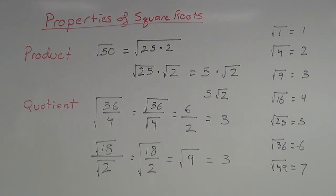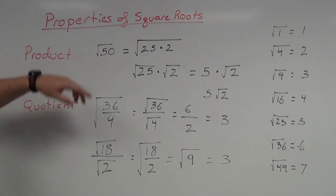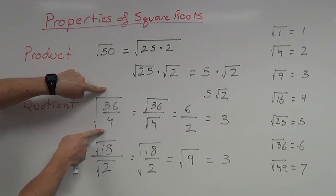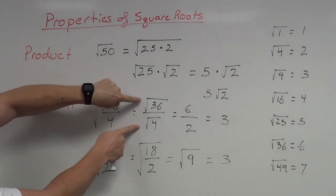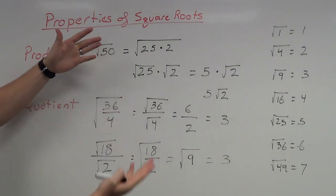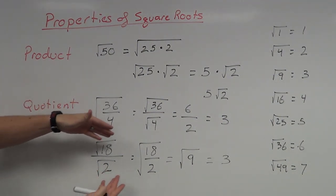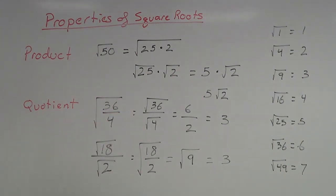So the quotient rule — there are kind of two ways you can look at it. You can take a fraction underneath the radical and split it up: take the square root of the top and the square root of the bottom. Or, if you have the square root of the top over the square root of the bottom, you can go backwards and bring them back together underneath a single radical. So those are the two properties of square roots — the product property and the quotient property.